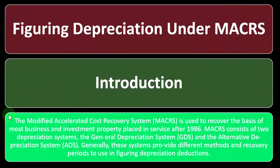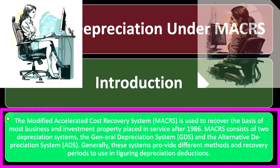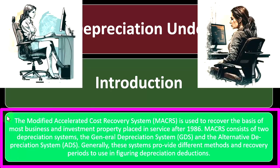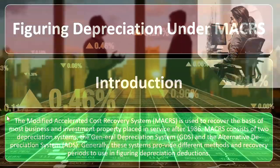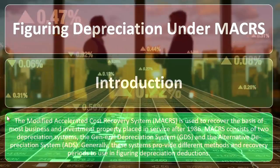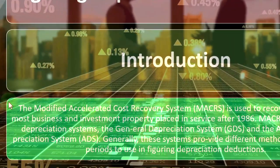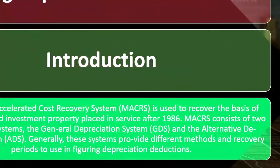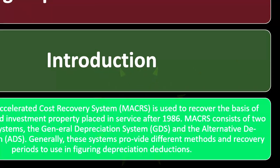The Modified Accelerated Cost Recovery System — MACRS — is the main system you'll deal with for taxes. It's used to recover the basis of most business and investment property placed in service after 1986. MACRS consists of two depreciation systems: the General Depreciation System, GDS, and the Alternative Depreciation System, ADS. Generally, these systems provide different methods and recovery periods to use in figuring depreciation deductions.